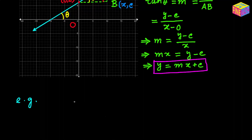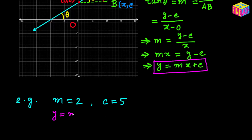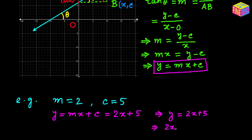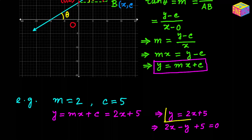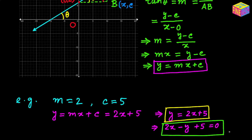Let's take an example. Suppose the slope is 2 and the y-intercept is 5, so c equals 5. The equation of the straight line is y equals mx plus c, which becomes y equals 2x plus 5. You can also write it as 2x minus y plus 5 equals 0. These are two ways of expressing the same equation — in the first form we mimic the y equals mx plus c format, and in the second form we keep everything on one side and zero on the other.